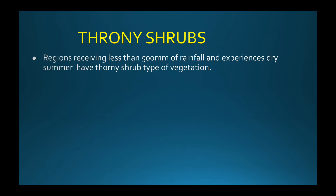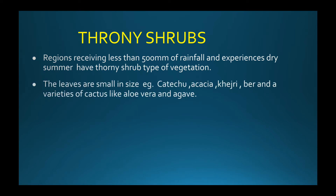Regions receiving less than 500 millimeters of rainfall and experiencing dry summers have thorny shrub vegetation. The leaves are small in size. Examples of plants found here include Katechu, Acacia, Khejri, Ber, and a variety of cactus-like plants such as Aloe Vera and Agave.